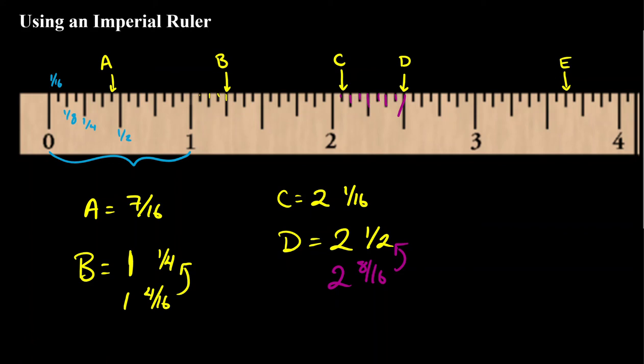And then e, well we know it's between three and four. So it's three and a bit. So e is going to be three and some fraction. Is it the largest increment between the two? No. So it's not a half. Is it the second largest increment? No. So it's not a quarter. It's the third largest. So it's an eighth. It's going to be something over eight. So let's count how many of those there have been.